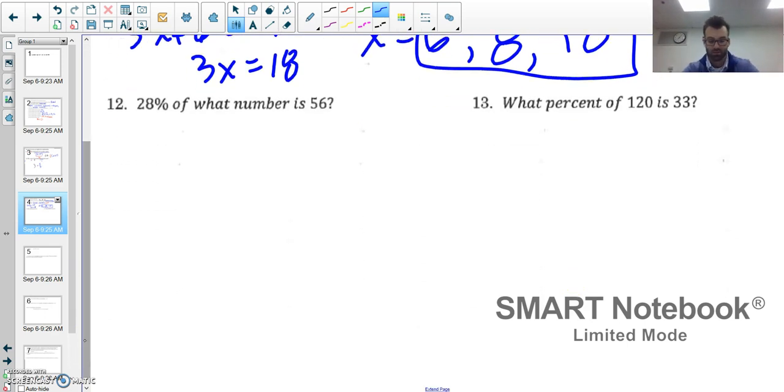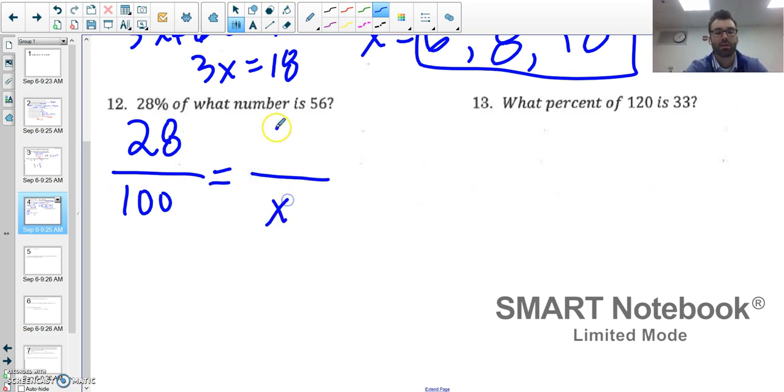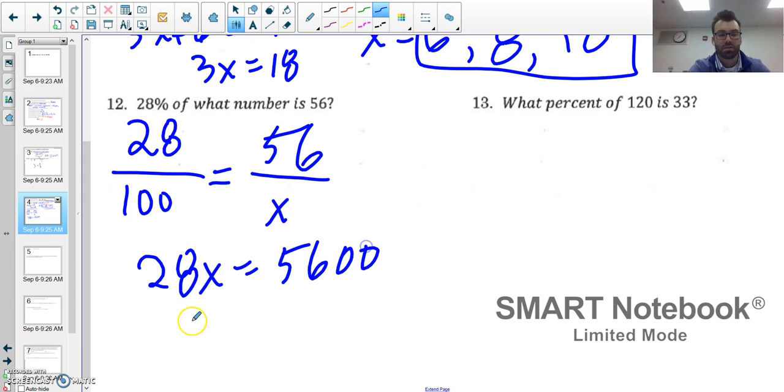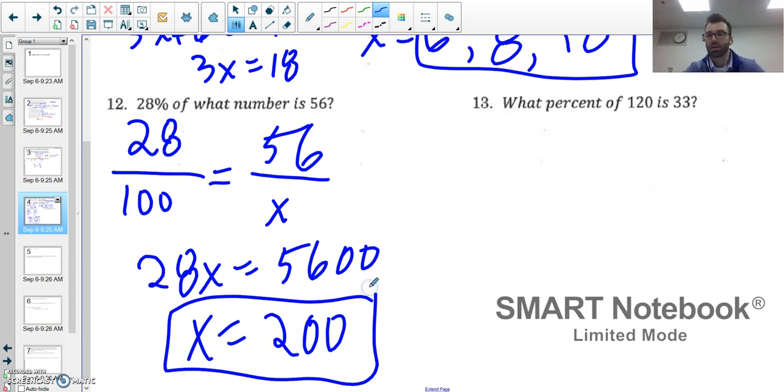28% of what number is 56. I'm going to set this up the easiest way I know how. Remember all percents are out of 100. I'm trying to figure out 28% of what number is 56, so I could set it up like this: 28/100 = 56/x. Cross multiply and get 28x = 5600, so x = 200. There are a bunch of different ways you could have done that.